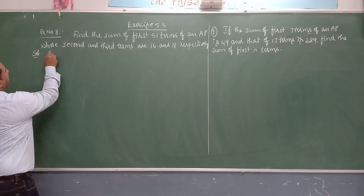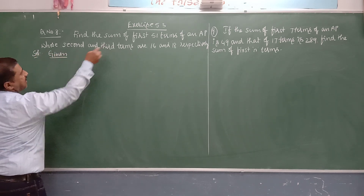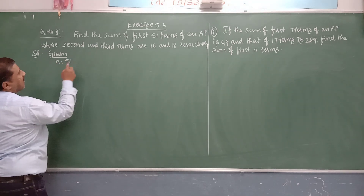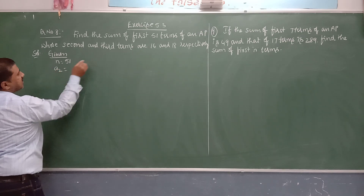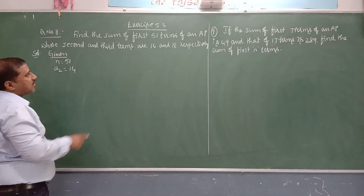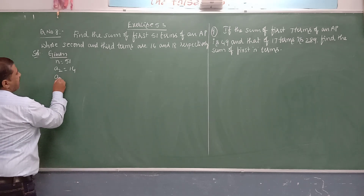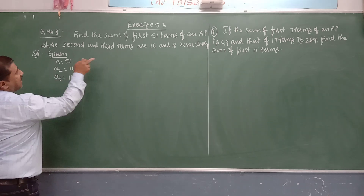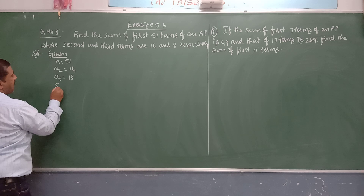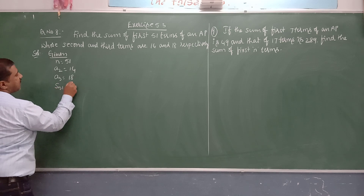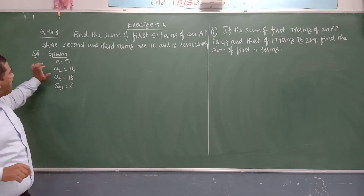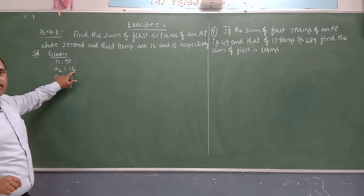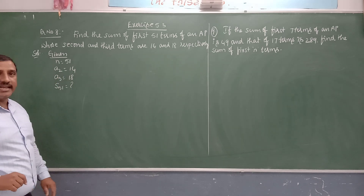Writing the given data: n = 51, a2 = 14, a3 = 18. We need to find S51. Since we know neither the first term a nor the common difference d, we must find them before applying the sum formula.